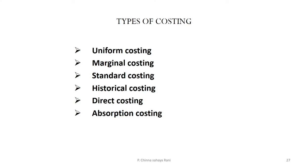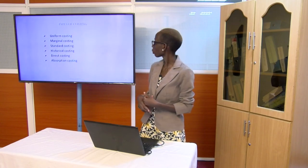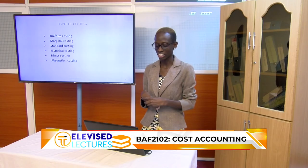Additional costing methods include uniform costing, marginal costing — comparing marginal costing and absorption costing — standard costing, direct costing, and historical costing. A summary question to consider: distinguish between financial accounting and cost accounting. Each of these topics will be handled separately in forthcoming sessions.